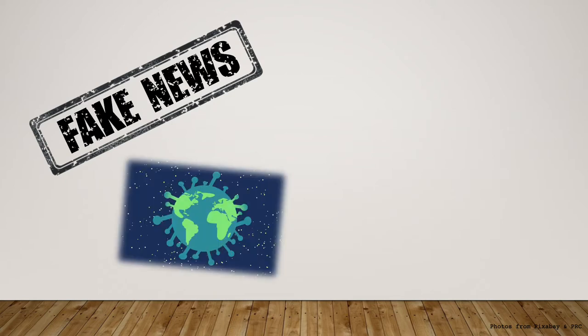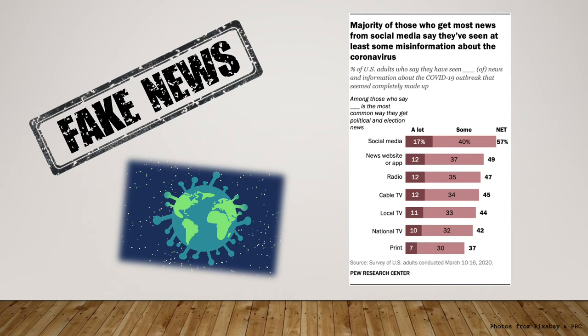A recent example of public concern over fake news comes amid the global coronavirus pandemic. A recent Pew Research Center survey of American adults shows the percentages of people who believe that something they have heard or read in regards to COVID-19 from their primary news source seems to be completely made up or false. The majority of those Americans — 57% — primarily use social media to get their news and believe that they have seen or read false information about the coronavirus outbreak on social media. Close behind that, at 49%, is another digital form: news websites and apps. This data tells us that a majority of Americans feel that the digital sources they turn to for news are producing false information.